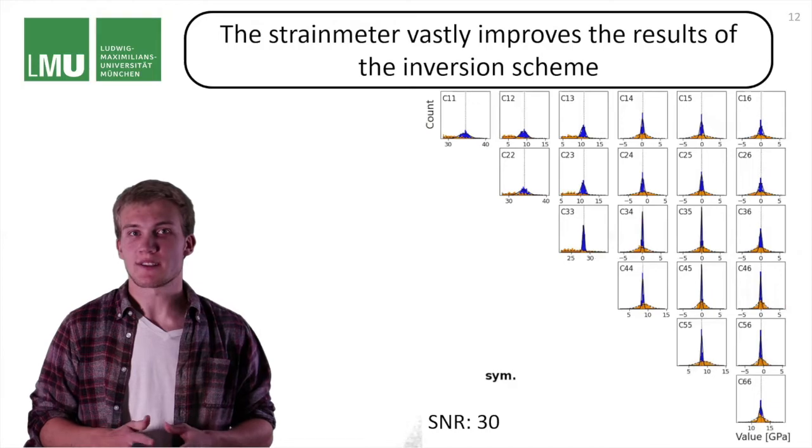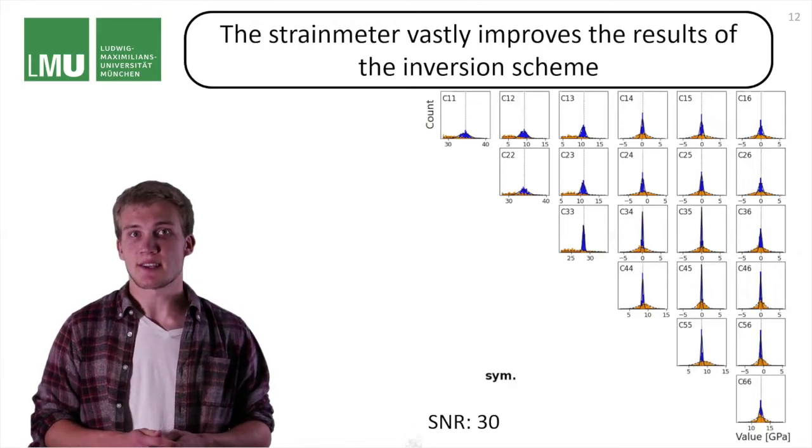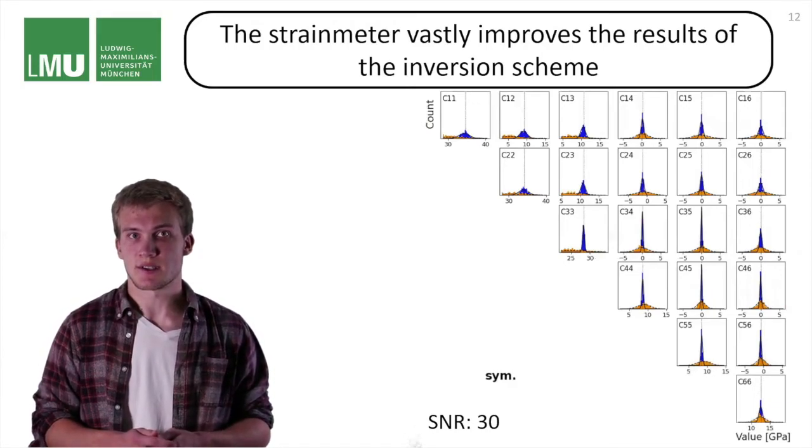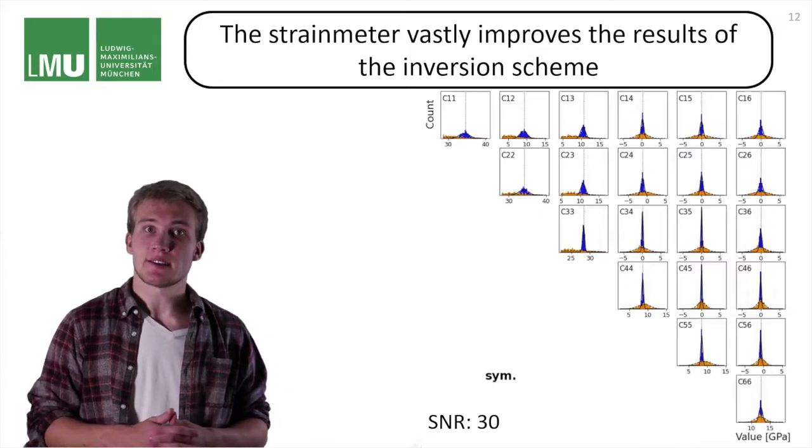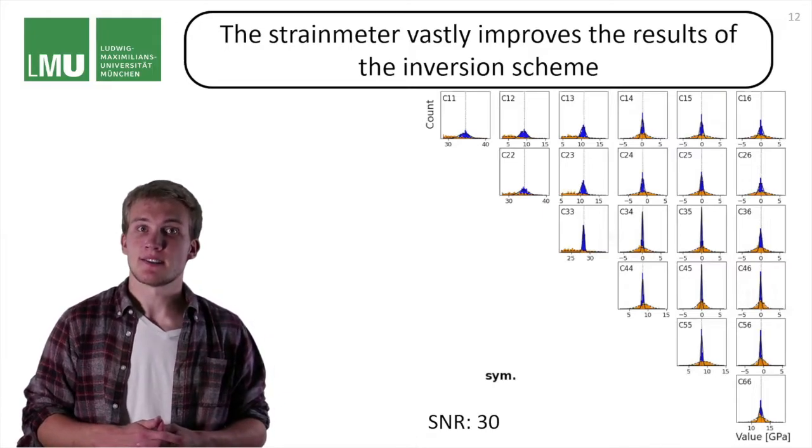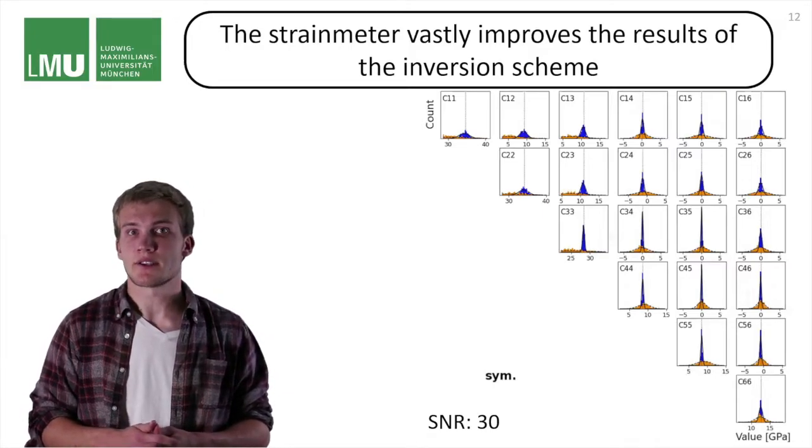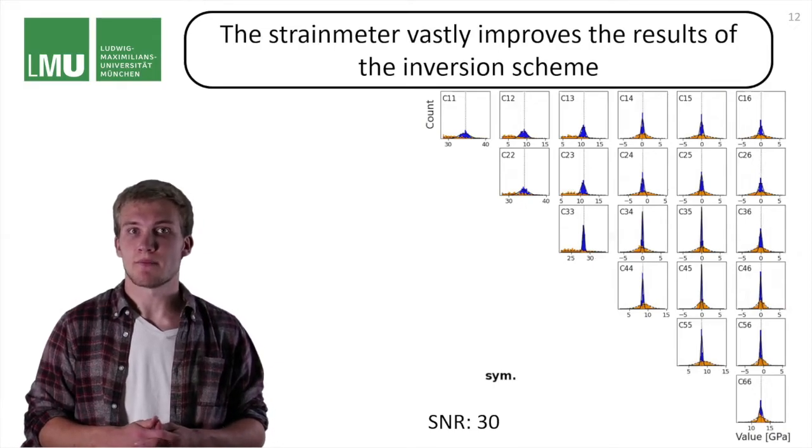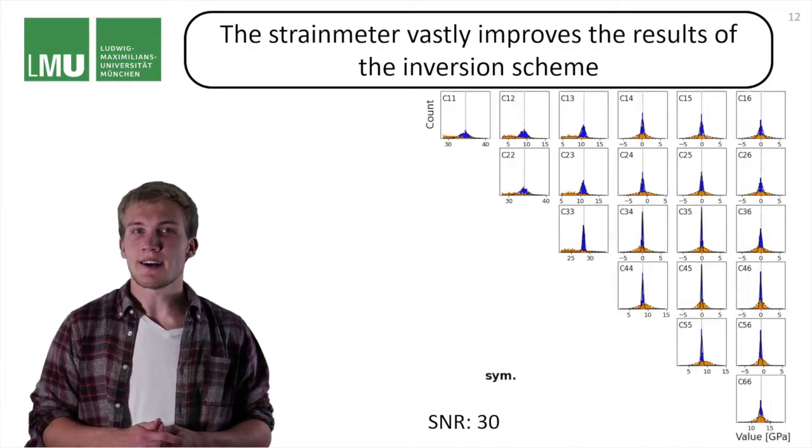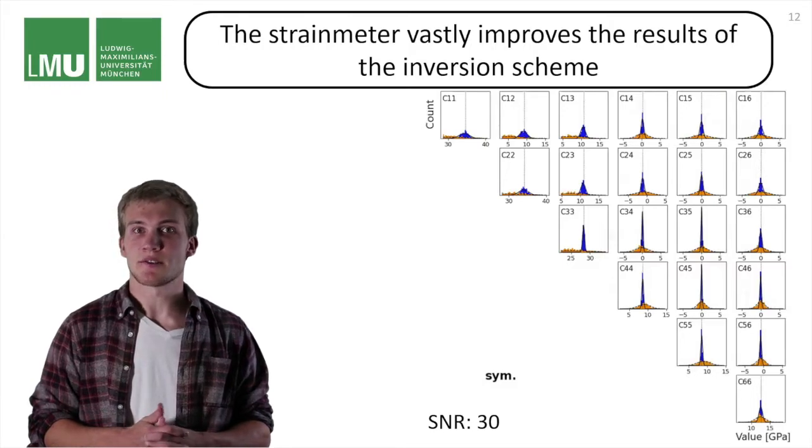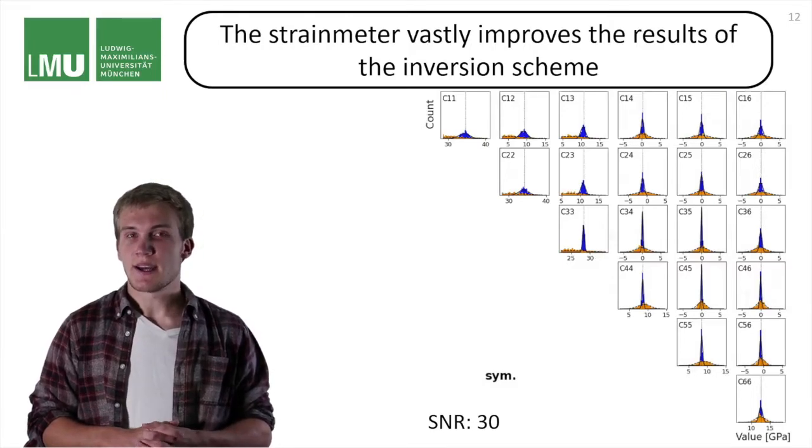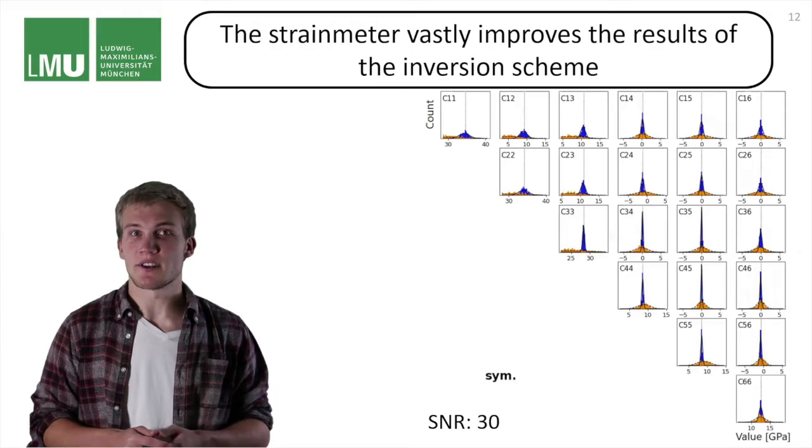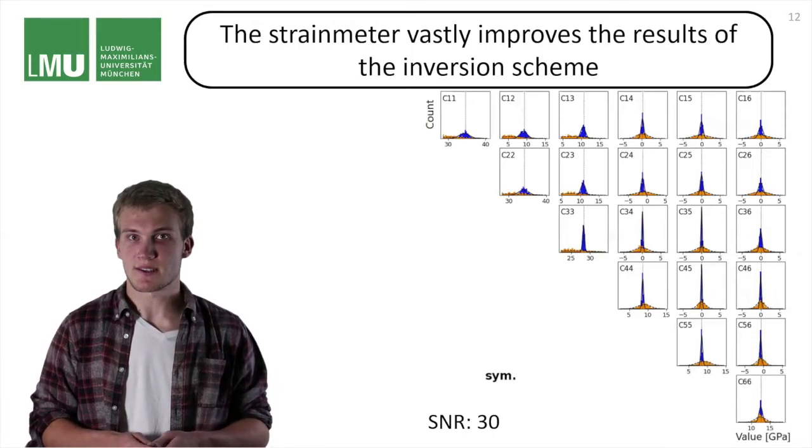This improved P wave velocity estimation definitely translates into the elastic tensor inversions. Here are some results. And in blue, you can see the seven component inversion, and in orange, the six component rotational method from before. And I have lowered the signal to noise ratio to 30 right here. As you can see, basically all parameters show an improvement over the rotational based scheme.